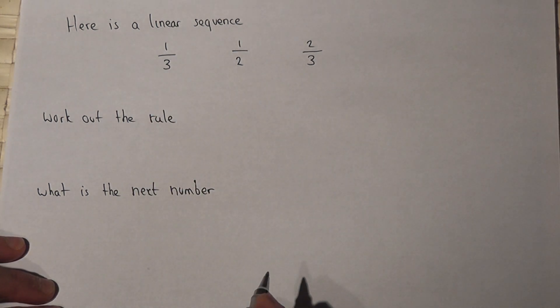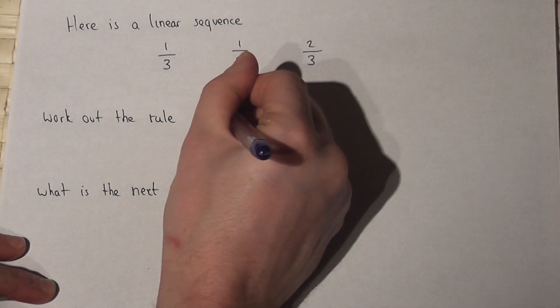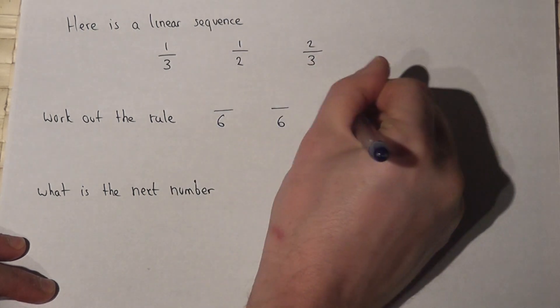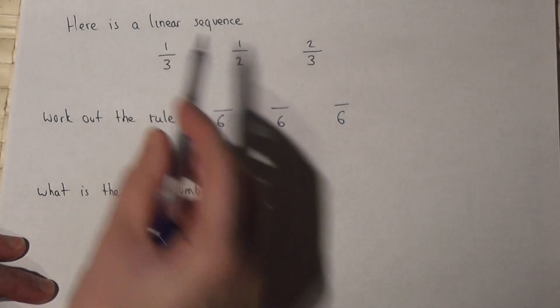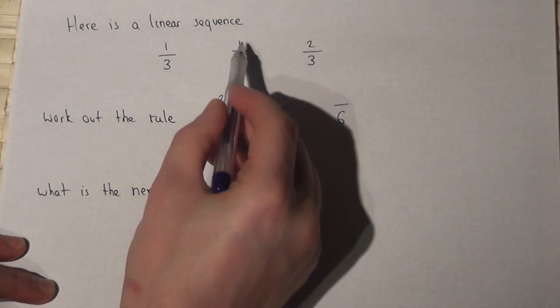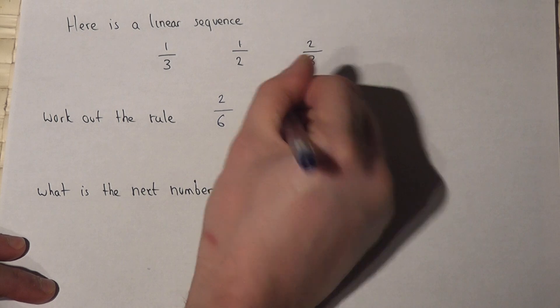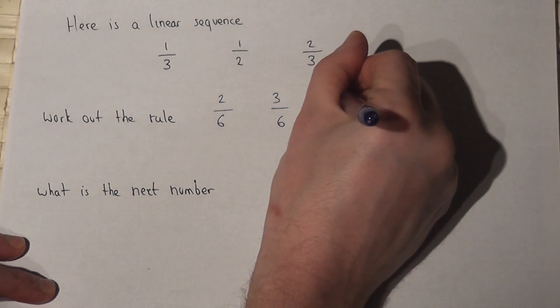Now 3, 2, and 3 all go into 6, so if I try and write these all over 6, then a third, that's times by 2, so 2 times 1 is 2. That's been times by 3, so 3 times 1 is 3. That's been times by 2, so 2 times 2 is 4.